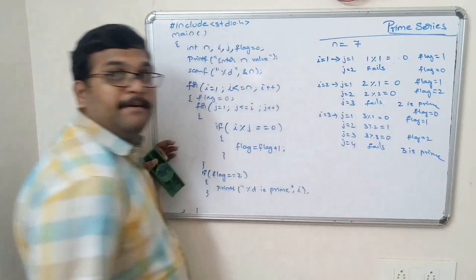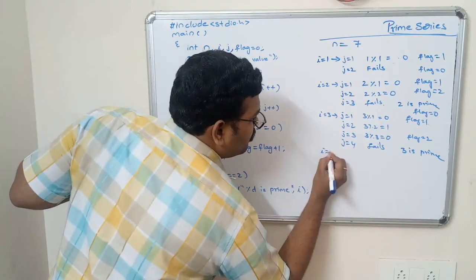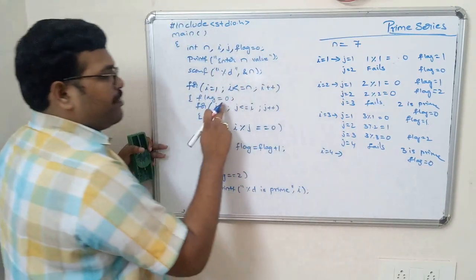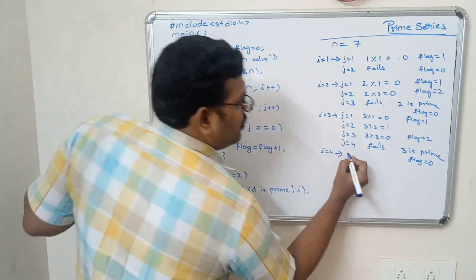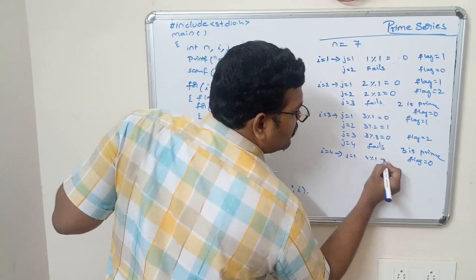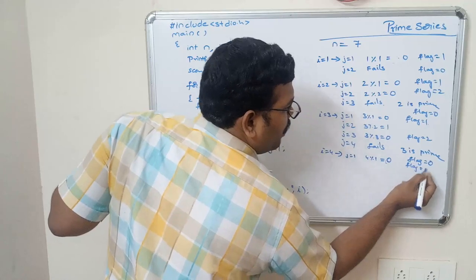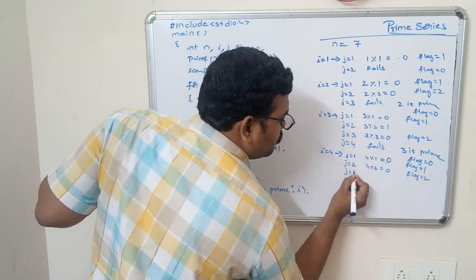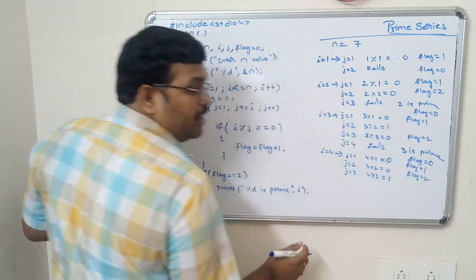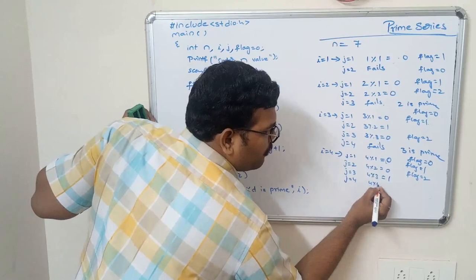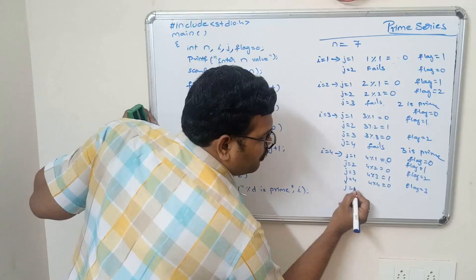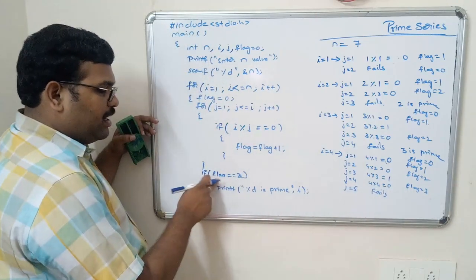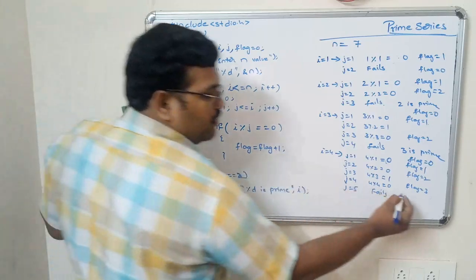Now i equals 4, flag is initialized to 0. For j equals 1, 4 mod 1 equals 0, flag becomes 1. For j equals 2, 4 mod 2 equals 0, flag becomes 2. For j equals 3, 4 mod 3 equals 1, so flag stays at 2. For j equals 4, 4 mod 4 equals 0, flag becomes 3. Then j equals 5 fails, and flag equals 3, not 2, so the condition fails and 4 is not printed as prime.